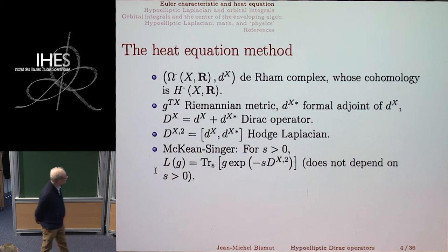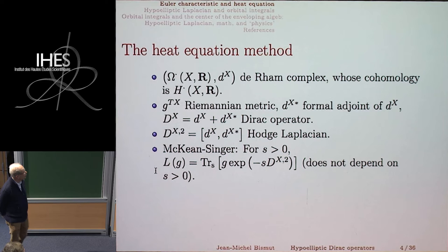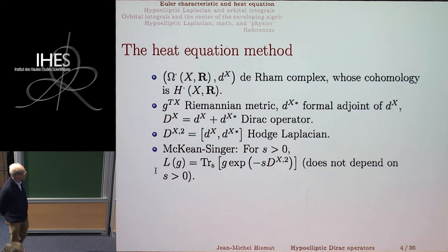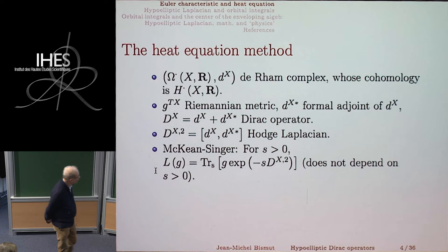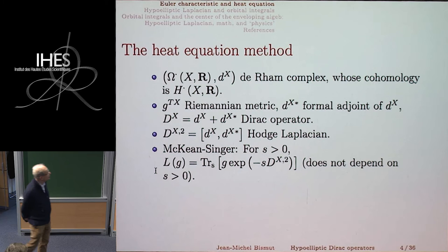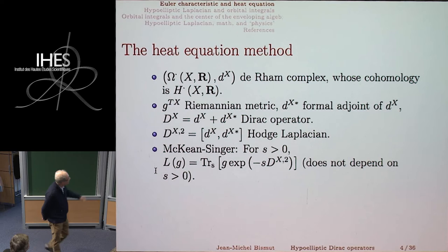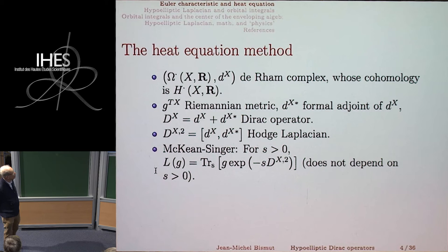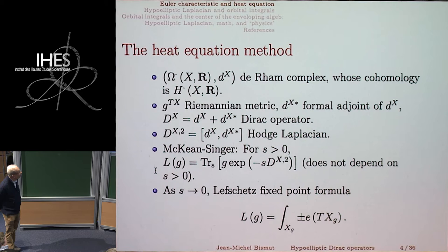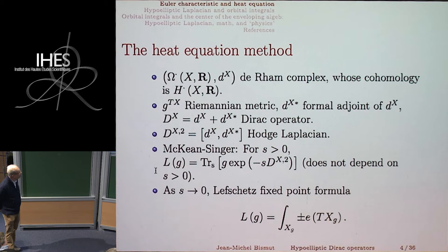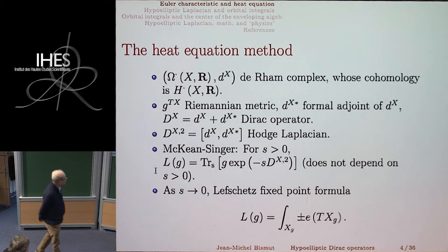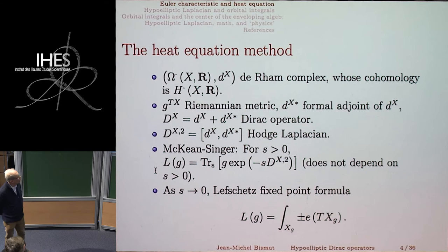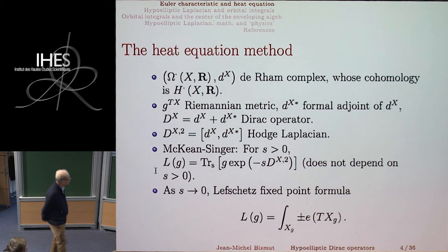The starting point is to re-express the Lefschetz number — a global invariant — in terms of supertraces of operators on an infinite-dimensional object. The supertrace of G times exponential minus s times Laplacian is independent of s, because non-zero eigenvalues cancel. By making s tend to zero, you prove the Lefschetz formula as an integral over the fixed-point set X^g of the Euler form of TX^g. If the fixed points are isolated, you get a sum of plus or minus 1.